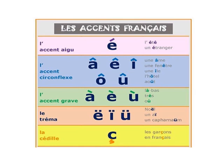Next is la tréma. You can see the letters E, I, and U with two dots on top — that is the tréma accent. This accent is called tréma. For example, Noël — you have already studied this word. Noël means Christmas.